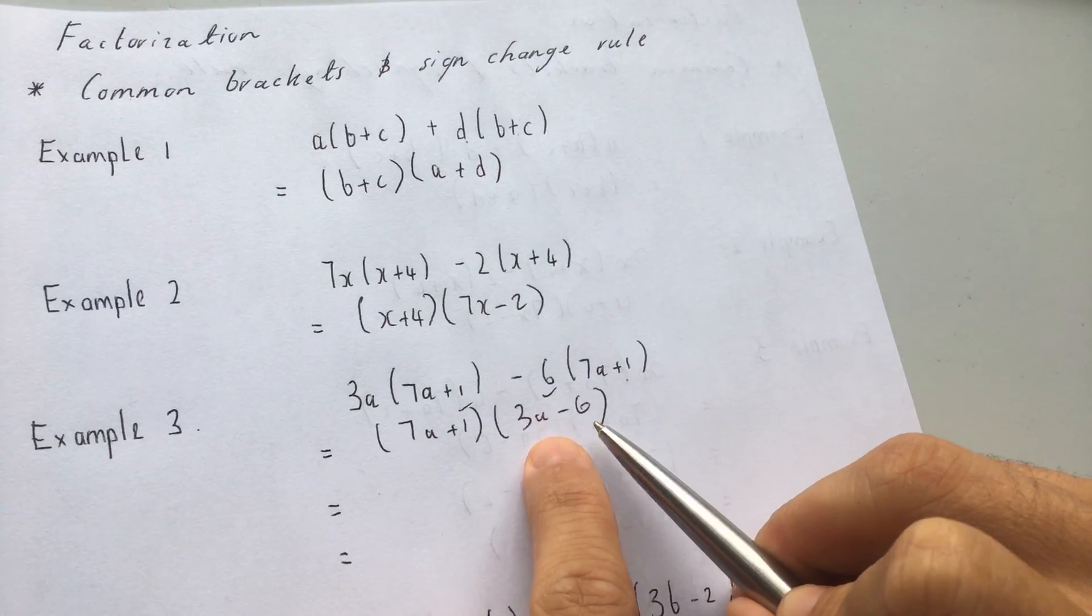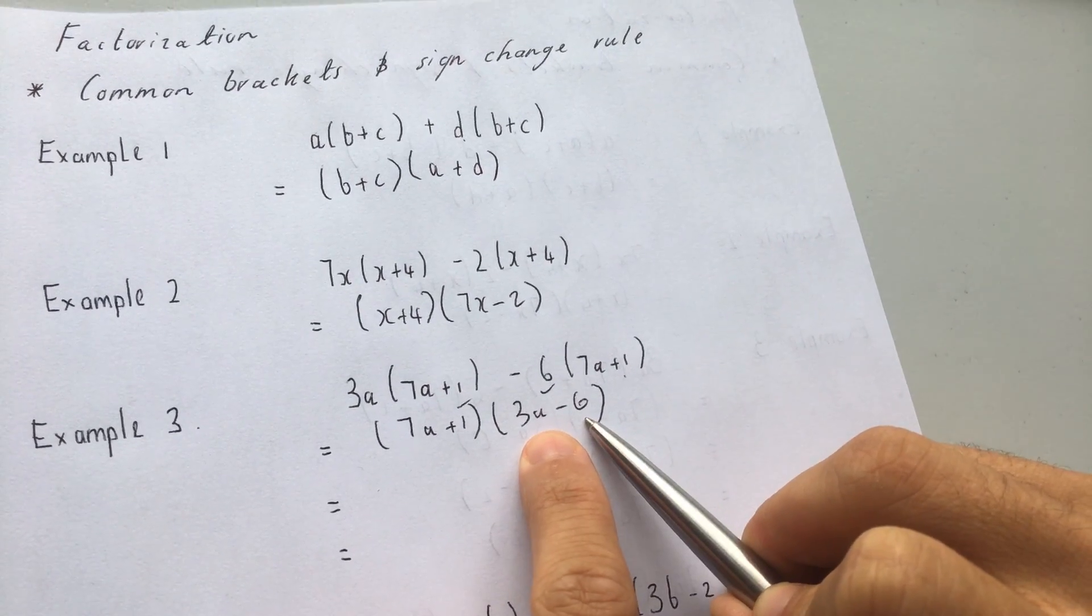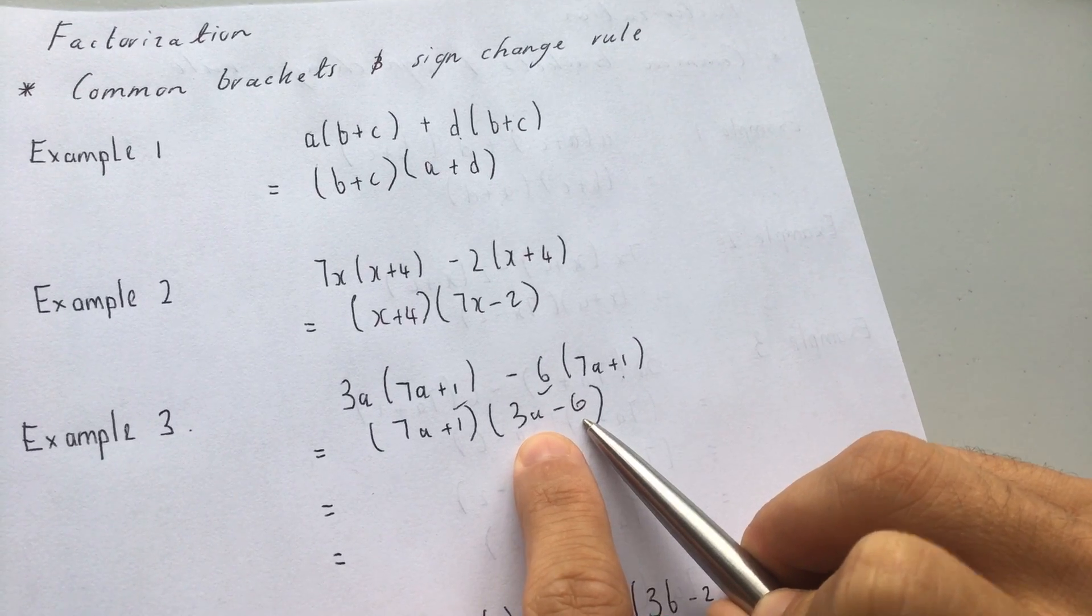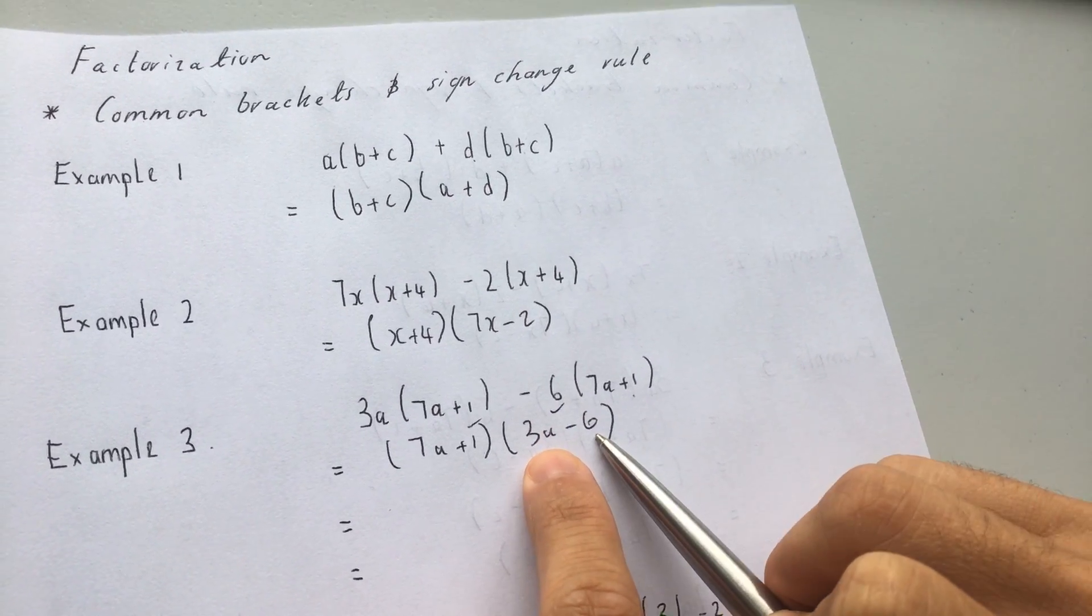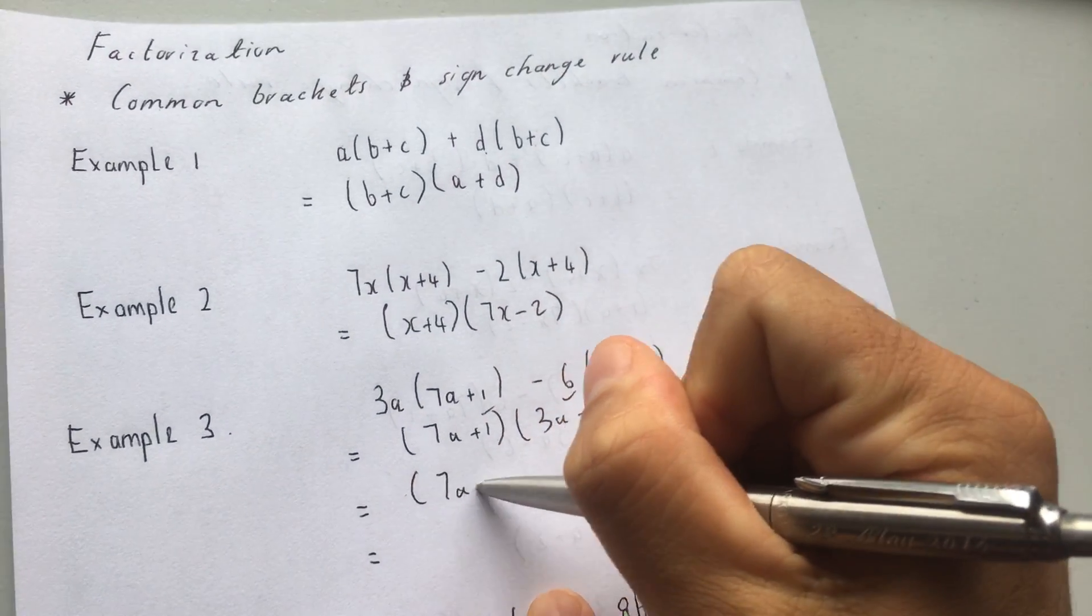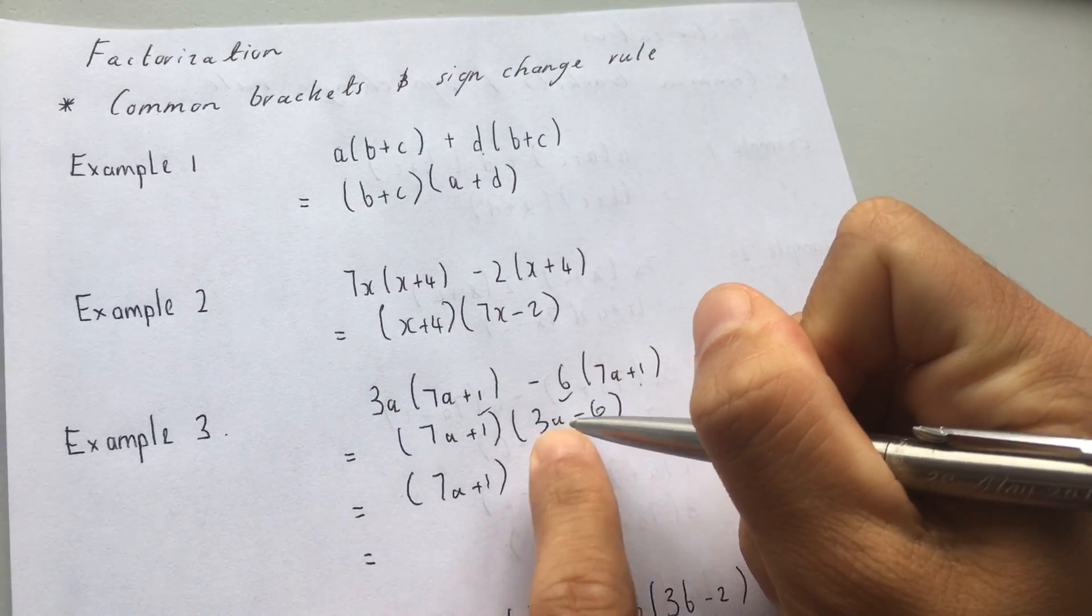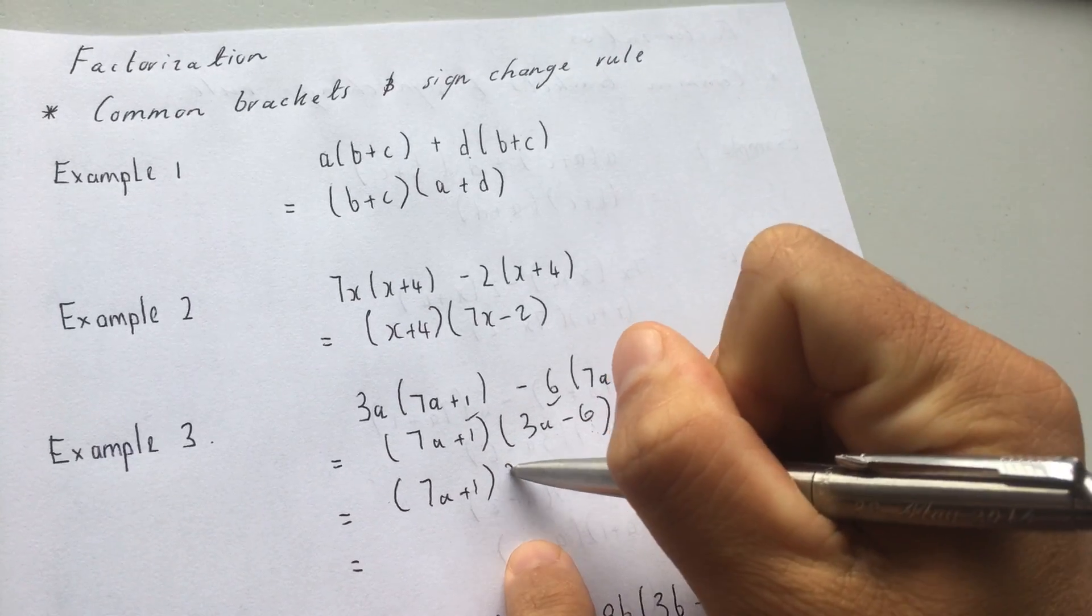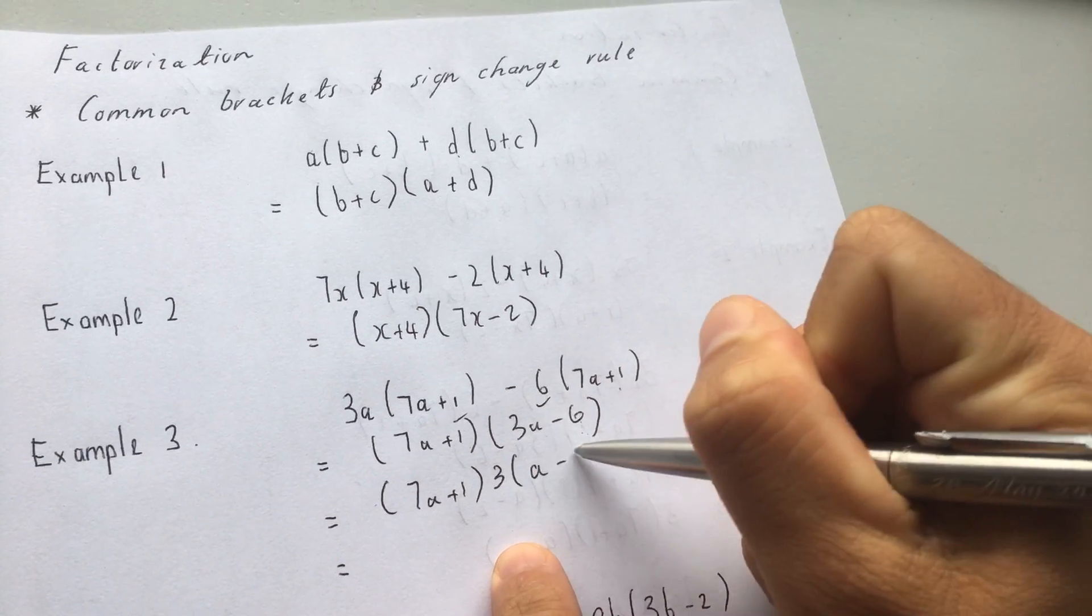But do you see that this can be a highest common factor pulled out as well? So I've pulled out the common bracket, but I can pull out a highest common factor. And what's the highest common factor over here? It's 3. So look, I've dropped this bracket. And then this bracket over here, I pull out a common 3. So I pull out my 3 and I'm left with A minus 2.